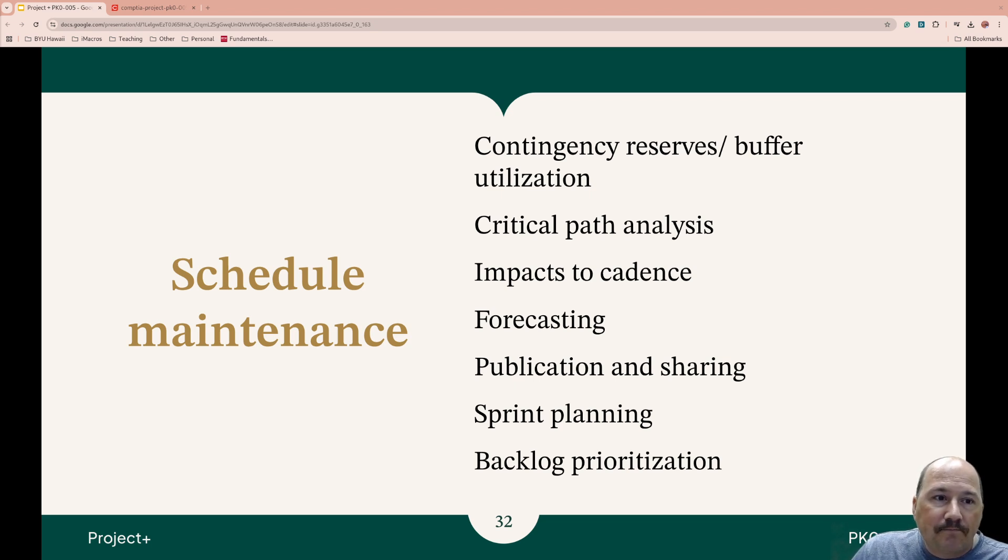Forecasting. Trying to predict the future project performance based upon the current performance or trends. Sometimes you might be going slow, but it might be speeding up. Publication and Sharing. The dismantling of the project information, the schedule and the updates to the stakeholders. We should be transparent with what we're doing.